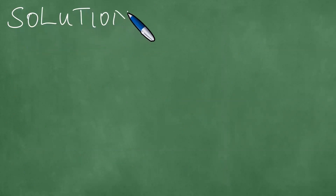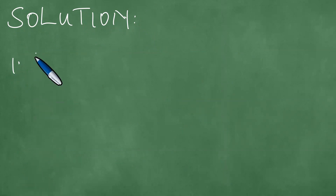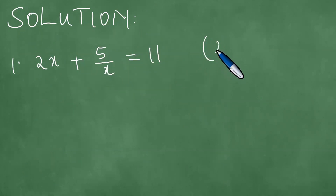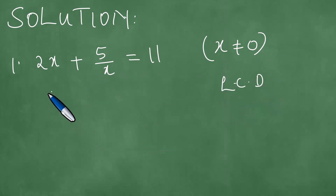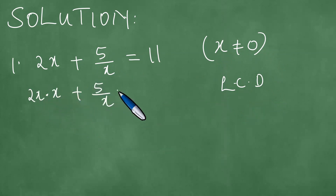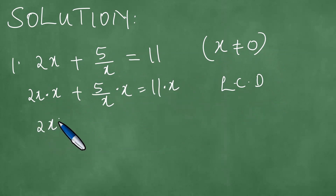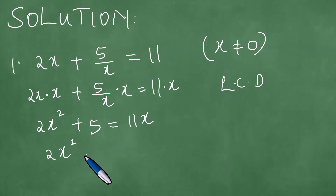Looking at the solution, there are a couple of things we need to consider. What did the examiner give us? They gave us 2x plus 5 over x, and the result is 11, with the condition that x is not zero. We consider what is at the bottom — that is x — and that constitutes the lowest common denominator. So we take 2x and multiply it by x, plus 5 over x multiplied by x, equals 11 multiplied by x. So 2x times x gives us 2x squared, plus the x cancels giving 5, and this equals 11x.